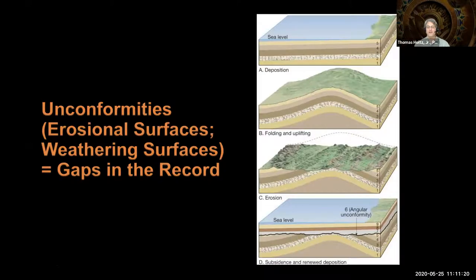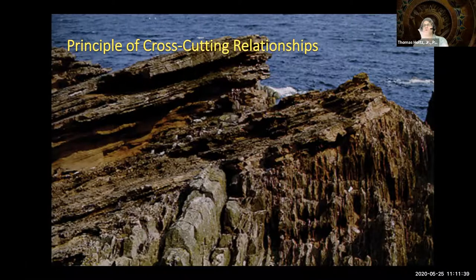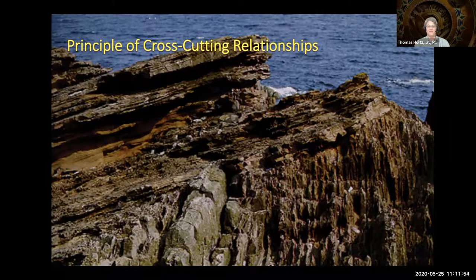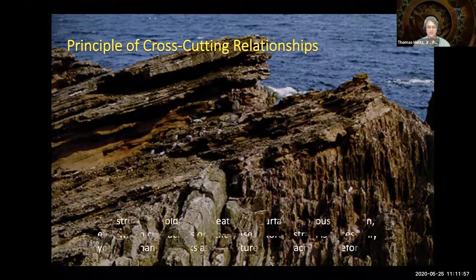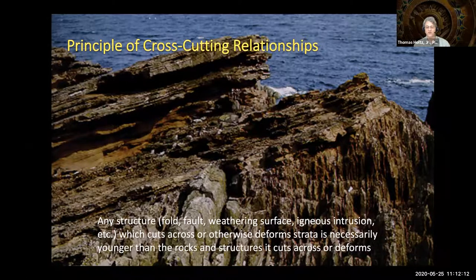The existence of unconformities led to the next major principle: the principle of cross-cutting relationships. Any structure — a fold, a fault, a weathering surface, an igneous intrusion — which cuts across or otherwise deforms strata is necessarily younger than the rocks and structures it cuts across or deforms. The paper has to be there before you can make the tear: that's the principle of cross-cutting relationships.